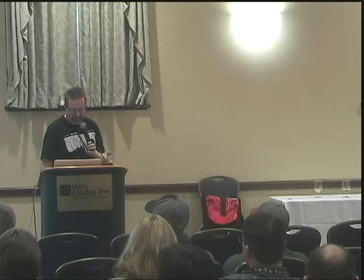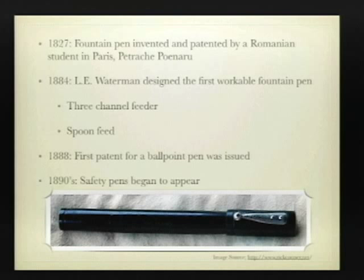Fountain pens continued to grow. 1884: L.E. Waterman designed the first really working fountain pen. He used a famous three-feeder model and spoon feeders, which allowed ink to consistently flow down to the paper and provided very consistent results. And actually in 1888, the first patent was issued for a ballpoint pen, but it was designed to write on leather rather than on paper and never really became commercially viable.